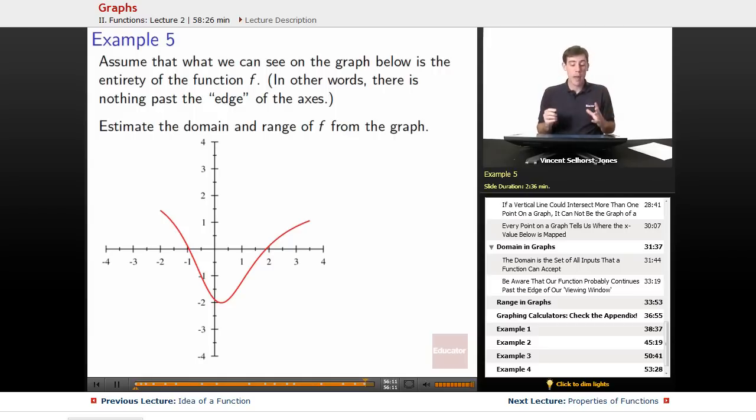Now remember, the domain was everything that can be input. So if we go to say 0, 0 shows up in the graph. What about negative 3? Well negative 3 never shows up in the graph.